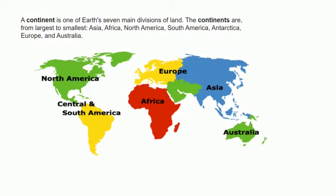What are continents, children? A continent is one of the Earth's seven main divisions of land. The continents are a huge mass of land. The important continents, if we arrange from largest to smallest, the order will be like this: Asia, Africa, North America, South America, Antarctica, Europe, and Australia.